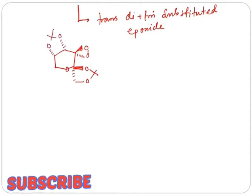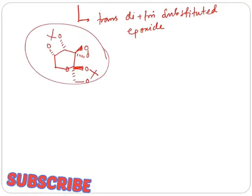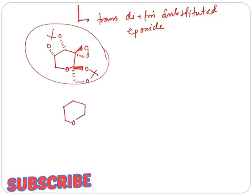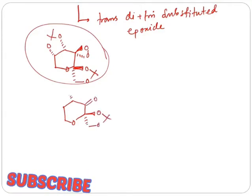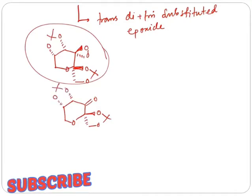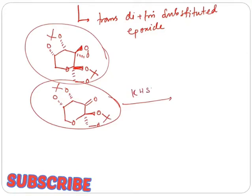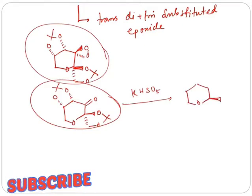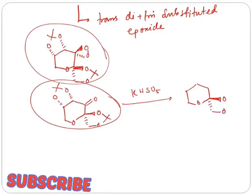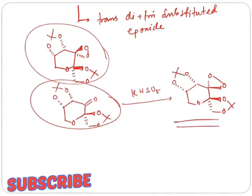And this catalyst can be synthesized from the diketal-protected fructose by treating with potassium peroxo monosulfate to get the diketal-protected dioxirane derivative of fructose. So this is the active catalyst of Shi epoxidation reaction. Now I will discuss the catalytic cycle.